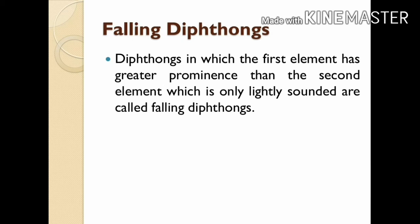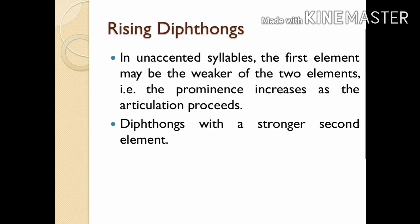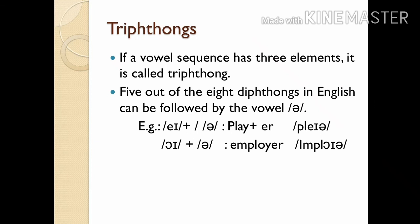English diphthongs are also classified into falling and rising diphthongs. Diphthongs in which the first element has greater prominence than the second — which is only lightly sounded — are called falling diphthongs. All closing diphthongs and the centering diphthong /eə/ are falling. In unaccented syllables, the first element may be weaker, so the prominence increases as articulation proceeds; such diphthongs with a stronger second element are called rising diphthongs.